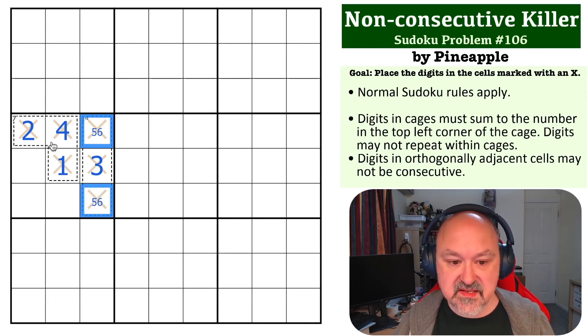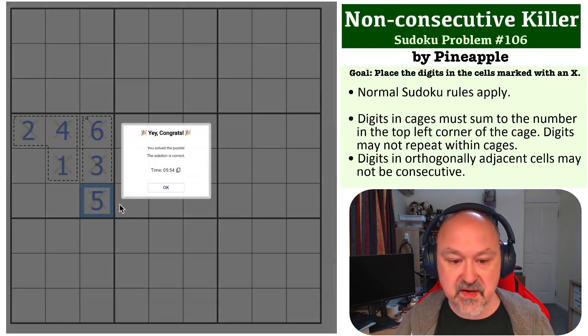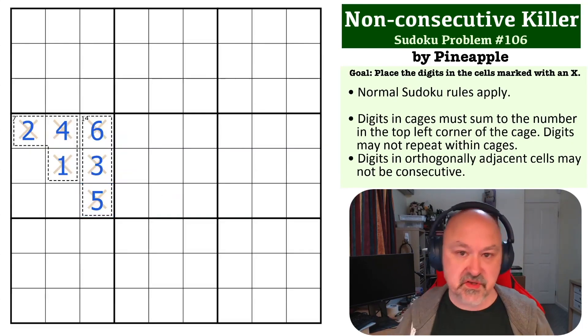There's no three in these and four can't be next to five. So this becomes the six and this becomes the five. And that's the solution to the problem.